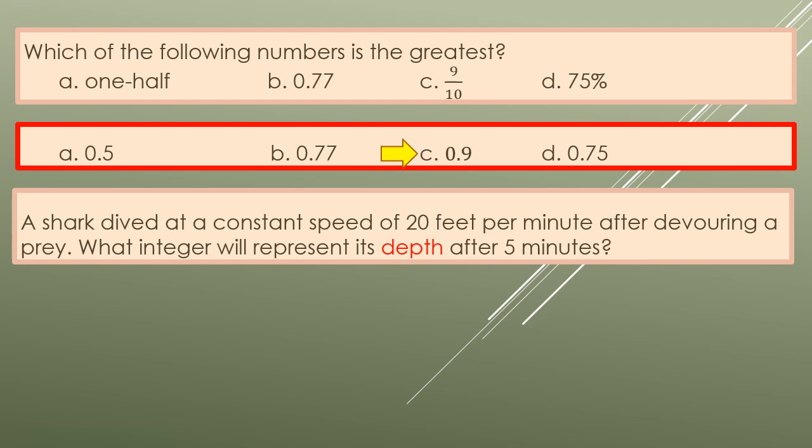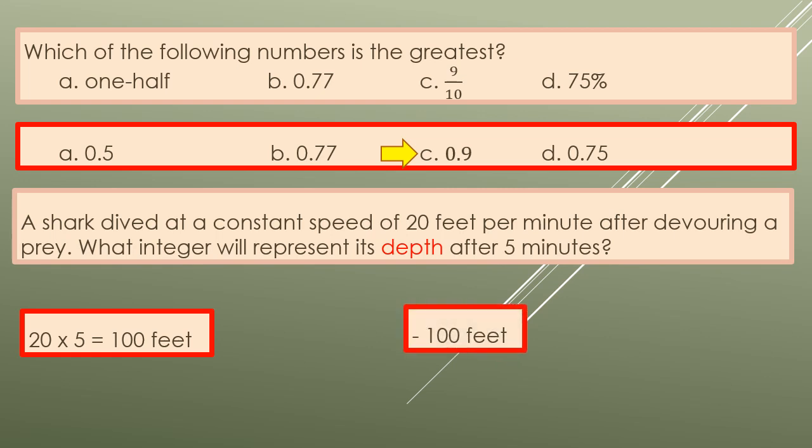A shark dives at a constant speed of 20 feet per minute after devouring a prey. What integer will represent its depth after five minutes? We are given that a shark dives at a constant speed, so its speed is 20 feet per minute. The question is how deep will it reach after five minutes? We have 20 times 5 equals 100 feet. So after five minutes, per minute is 20, so 20 feet times five minutes equals 100 feet. But we are looking for direction, therefore how deep. Since it's depth, negative and positive are also used for direction, so we have negative 100 feet.